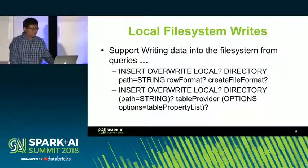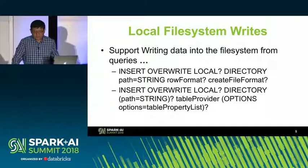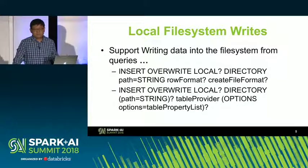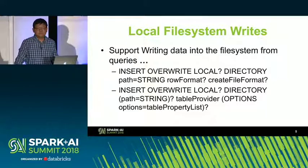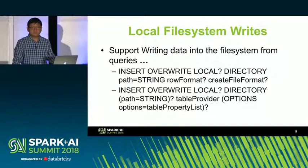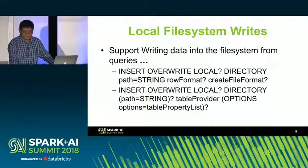The second feature gap is local file system writes. When data engineers write their pipelines, they may want to do some testing or inspection of the data. This may not be used a lot in production, but during development it is used a lot. So we also implemented this feature and committed it to upstream.